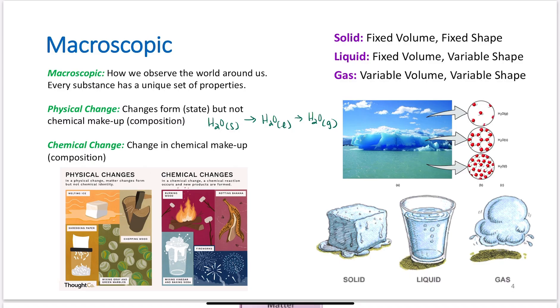Something that hasn't actually changed the chemical composition. We can see some examples down here: the melting of ice, chopping wood, spreading paper, mixing two different types of marbles together.